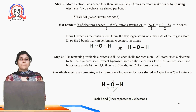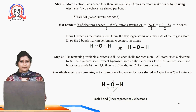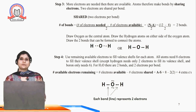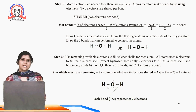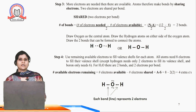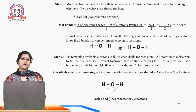Step 4: use remaining available electrons to fill the valence shell for each atom. All atoms need 8 electrons to fill their valence shell, except hydrogen needs only 2 and boron only 6. For H2O, there are 2 bonds and 2 electrons per bond. Available electrons remaining equals electrons available minus electrons shared: A minus S equals 8 minus (2 × 2), giving 4 extra electrons. So each bond represents 2 electrons in the water molecule.